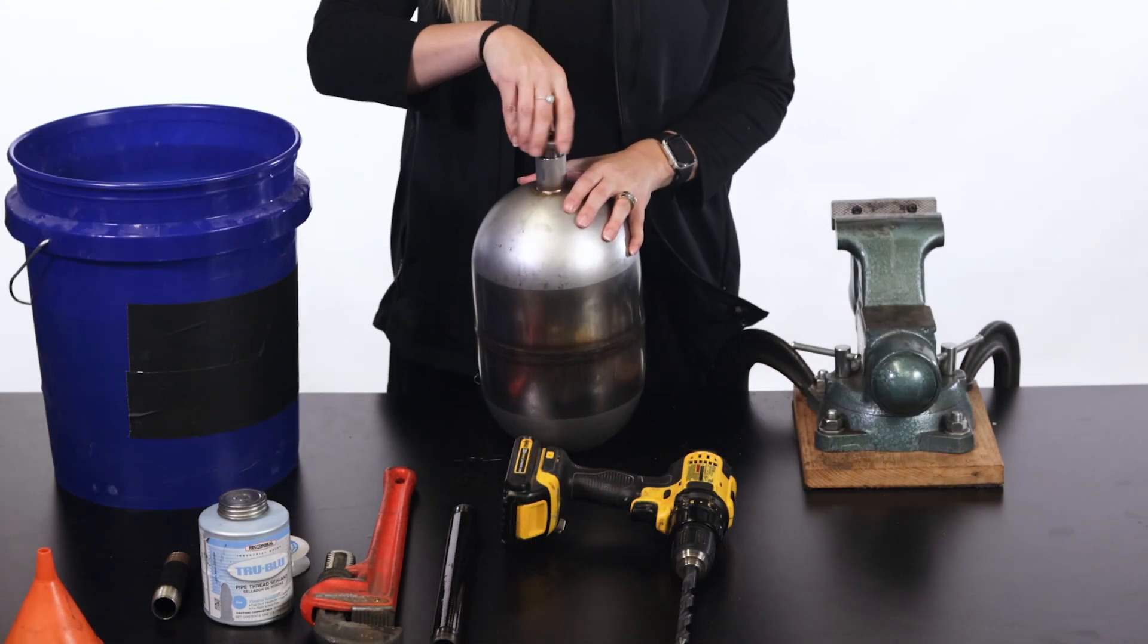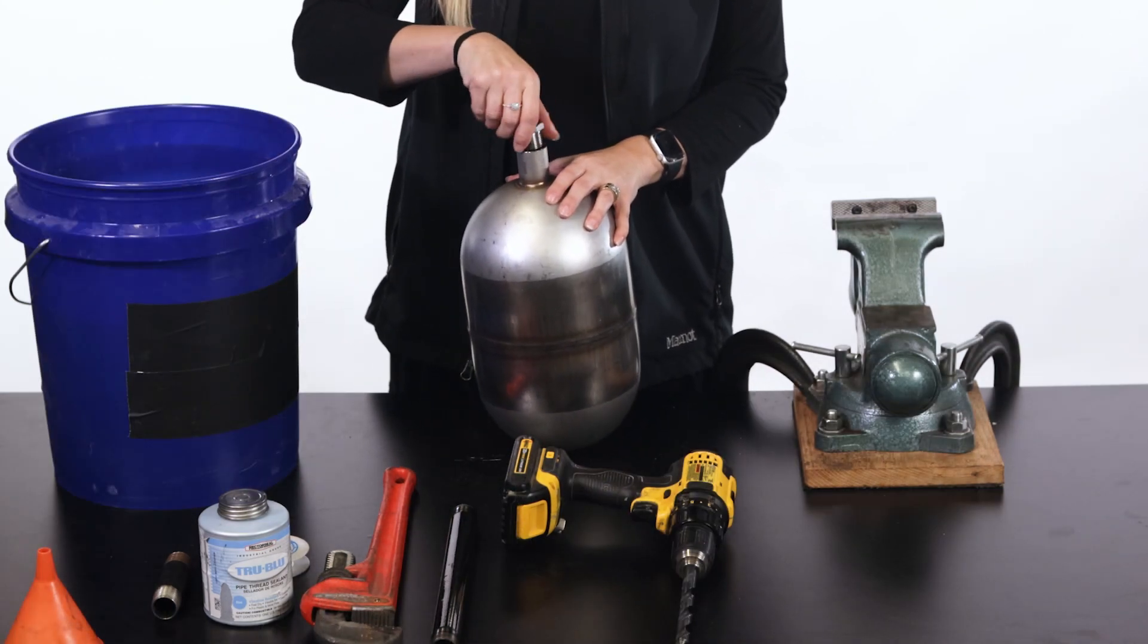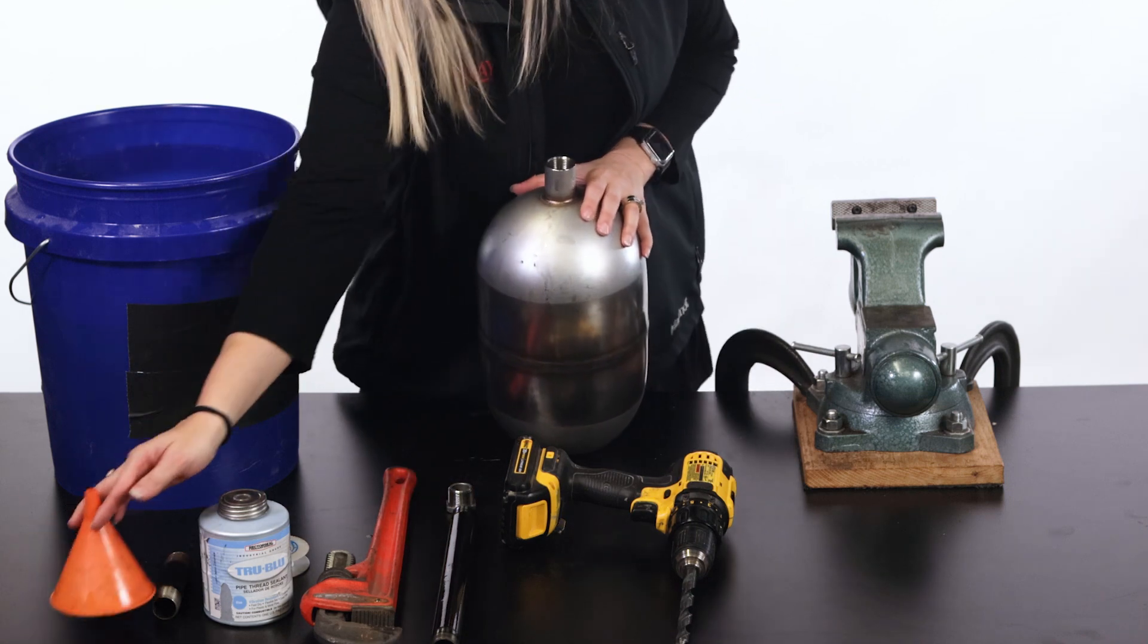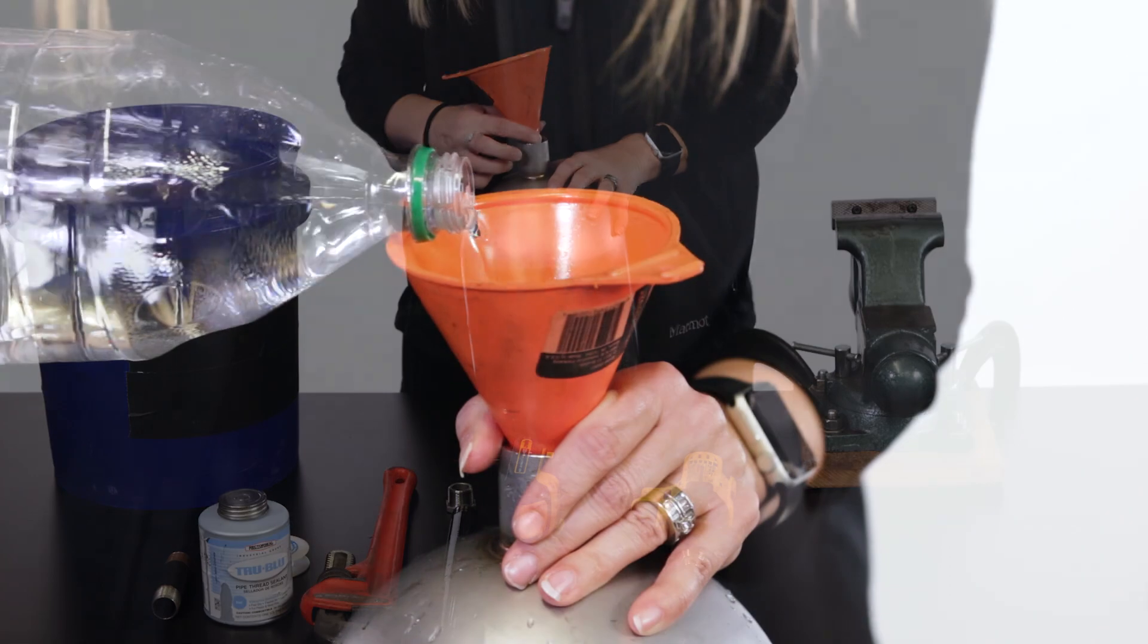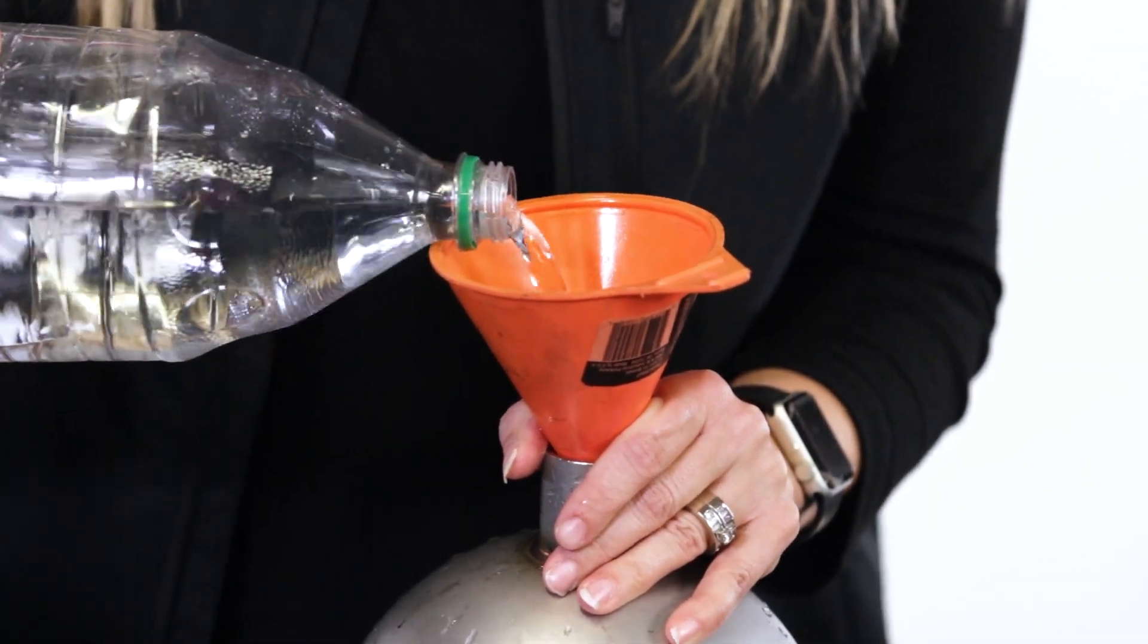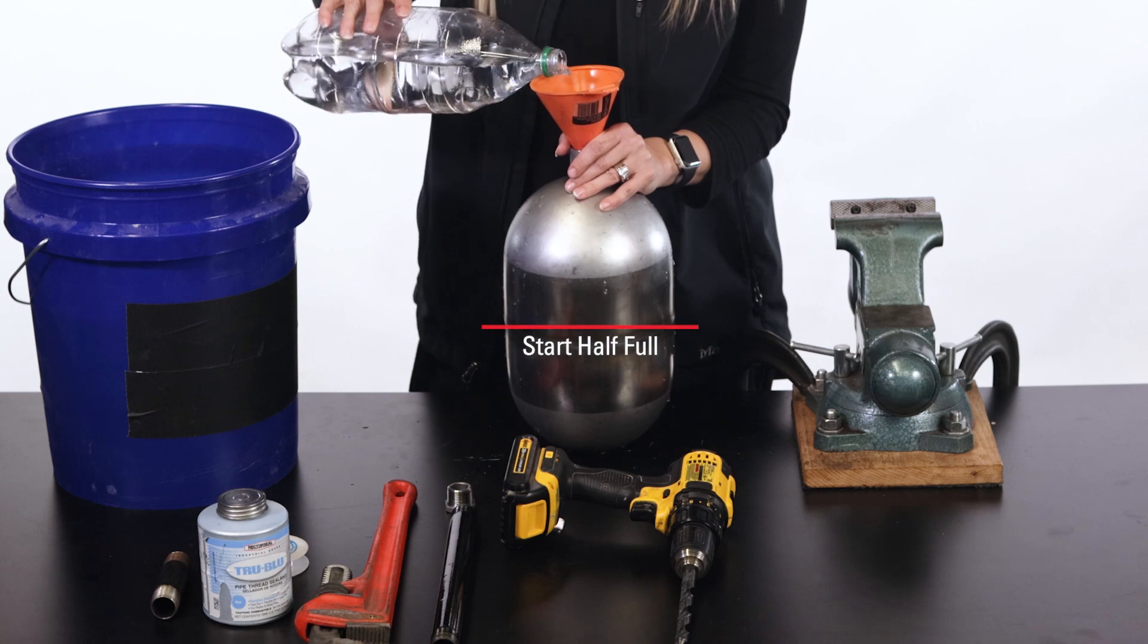This is where you will pour in the BBs, sand, or produced water. In our case, we're using water. Using a funnel, pour water into the float ball. This is a trial and error process and the weight needed will vary. We're going to start by filling it halfway and then test it.